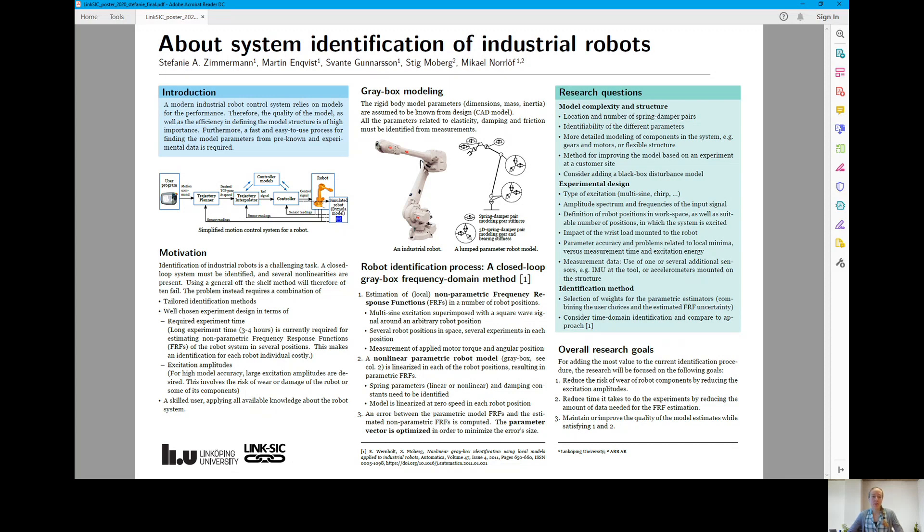Identification of industrial robots is in general a challenging task. A closed-loop system must be identified and several non-linearities are present. Non-linearities are for example related to friction in the joints of the robot or they occur due to the specific behavior of the gearboxes.